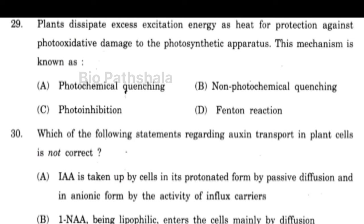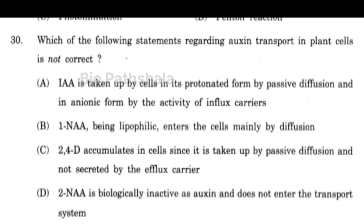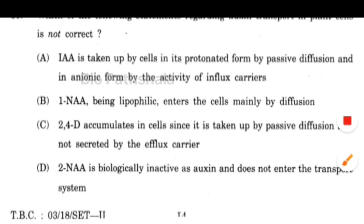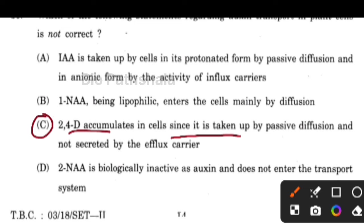Next question: plants dissipate excess excitation energy as heat for protection against photo-oxidative damage to the photosynthetic apparatus — this mechanism is known as non-photochemical quenching. Next question: which of the following statements regarding auxin transport in plants is not correct? The correct answer is option number C — that 2,4-D accumulates in cells since it is taken up by passive diffusion and not secreted by the efflux carrier.